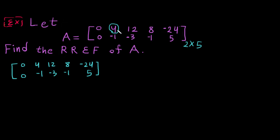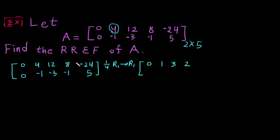Dividing by 4 keeps everything as integers, which is the easiest way. So I want to divide row 1 by 4: 0 over 4 is 0, 4 over 4 is 1, 12 over 4 is 3, 8 over 4 is 2, and minus 24 divided by 4 is minus 6. We don't change the second row, so it stays: 0, minus 1, minus 3, minus 1, 5.